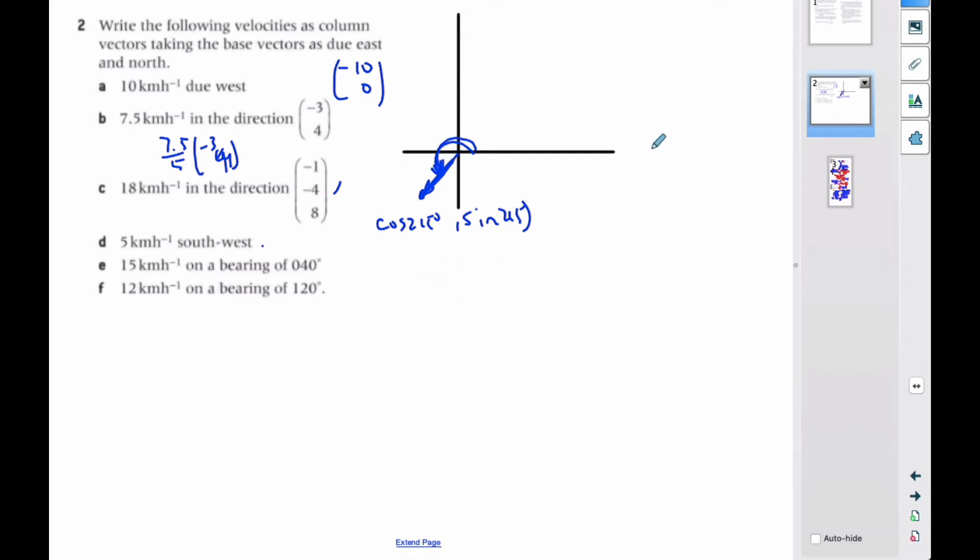So that means my vector is going to be, for part D, it's going to be 5 cosine 215 over 5 sine of 215. And this is going to be taken care of all by, the positive and negative will be taken care of by the sines and cosines.